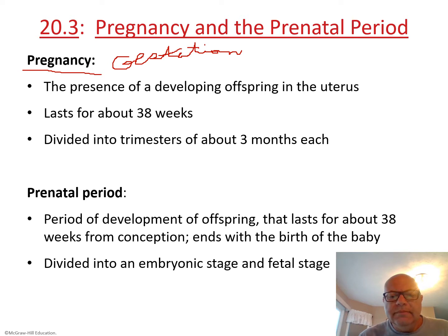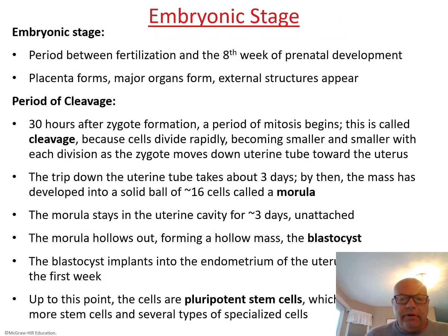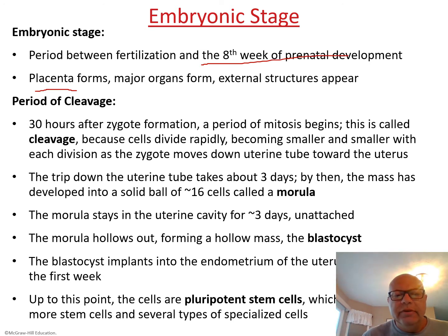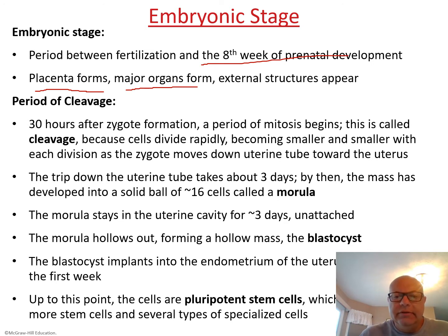The prenatal period is divided into stages. During the embryonic stage, from fertilization through the eighth week, we are considered to be embryos. At this point the placenta forms, major organs form, and we start to see some external structures. About 30 hours after the zygote forms, a period of mitotic divisions called the cleavage stage begins.